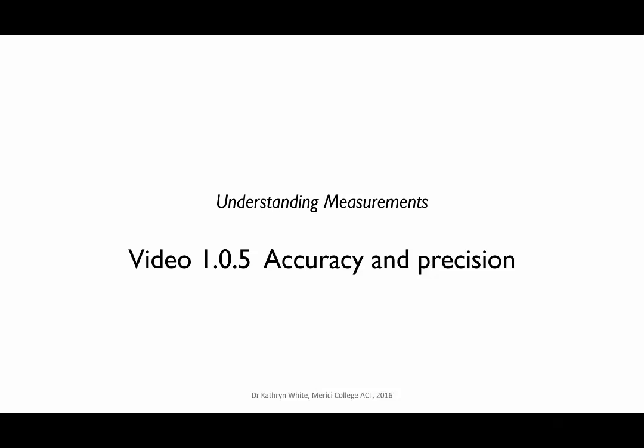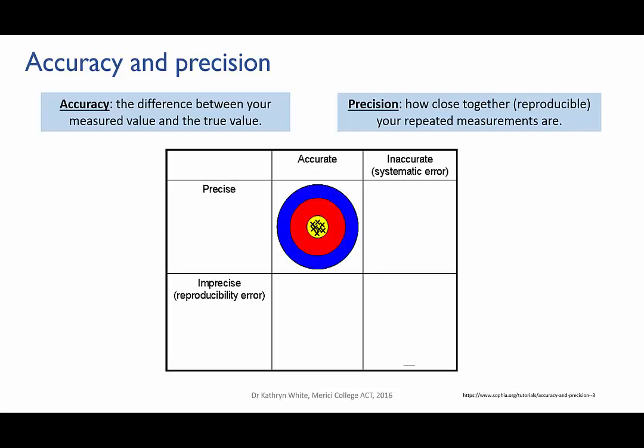In this video, we'll look at the concepts of accuracy and precision. We've looked at sources of error in measurements, random error and systematic error. Now each of these has an effect on your final measurement, on its precision and its accuracy.